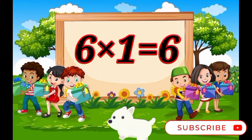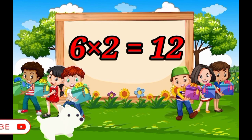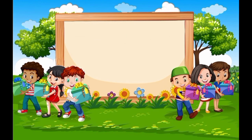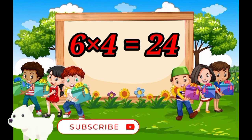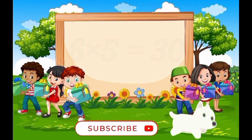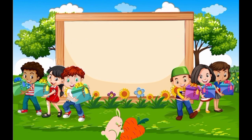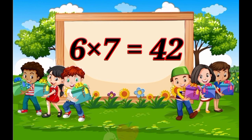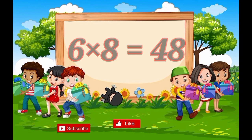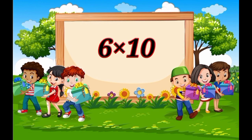Six ones are six, six twos are twelve, six threes are eighteen, six fours are twenty-four, six fives are thirty, six sixes are thirty-six, six sevens are forty-two, six eights are forty-eight, six nines are fifty-four, six tens are sixty.